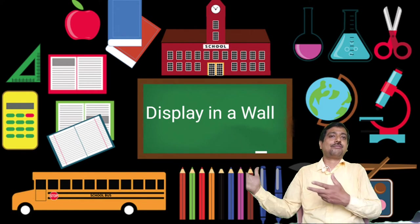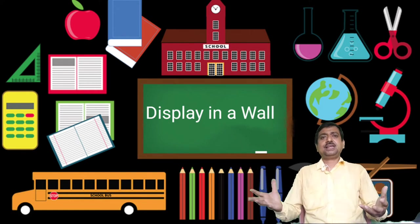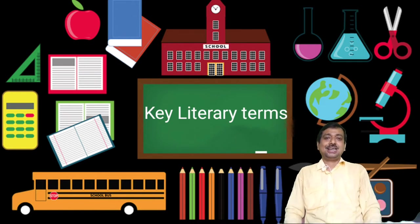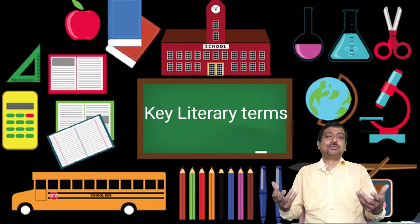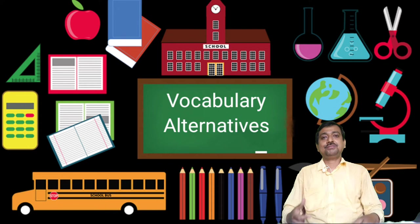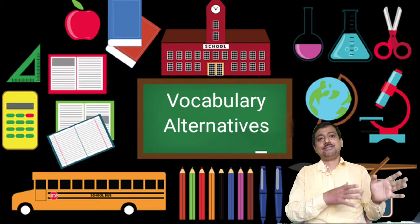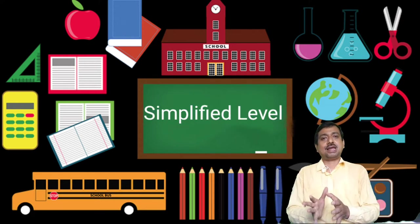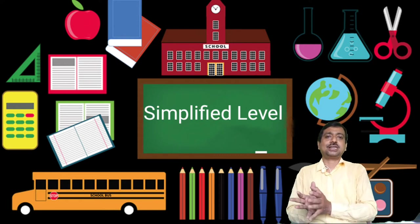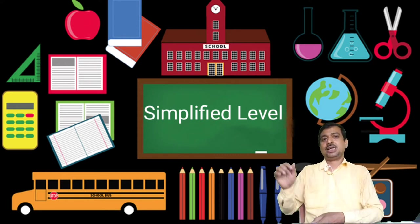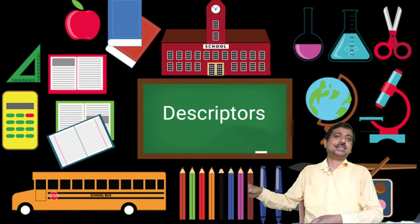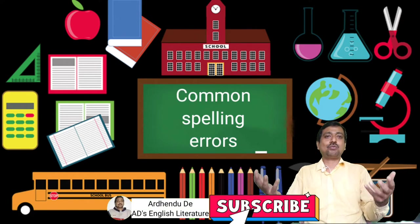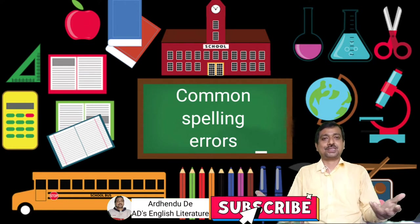The next section is the Wall of Infinity. Students spend a lot of time gazing at the walls, lost in thought or simply lost. We, the teachers, may wish to include key literary terms, vocabulary, alternatives for critical issues, simplified level descriptors, and common spelling errors. This is a surprisingly simple and effective way of helping information stick. Just stick displays there on the walls — it is so effective. The back-end wall should be a vibrant source of information for students.